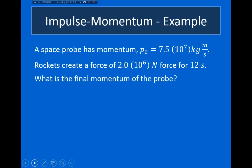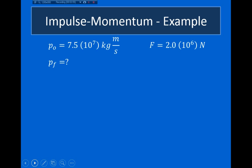Let's look at a couple of examples. The first example says a space probe has an initial momentum of 7.5 times 10 to the 7 kilogram meters per second. Rockets create a force of 2 times 10 to the 6 Newtons for 12 seconds. The question asks us to find the final momentum of the probe. All we have to do is use the impulse-momentum theorem, which tells us that the average impulse is equal to the change in momentum, and change in momentum is final momentum minus initial momentum. Rewriting to solve for final momentum, the final momentum is equal to the average impulse plus the initial momentum.